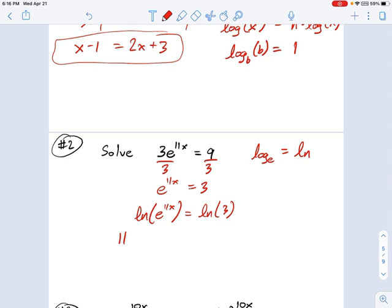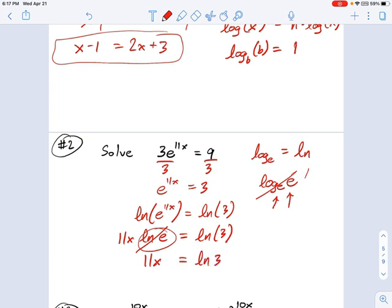Well, ln of e to the 11x is 11x times ln of e, natural log of e. And that's still equal to natural log of 3. And if you remember, ln of e, what is that? That's log base e of e, right? And anything where you have an equal base and argument crosses out to be 1. So this left side is just 11x. This term right here is just 1. And then on the right, you still have ln of 3. So our final answer becomes x equals 1 over 11 times the natural log of 3. And you couldn't have done that with exponential equality because you didn't have equal exponents.